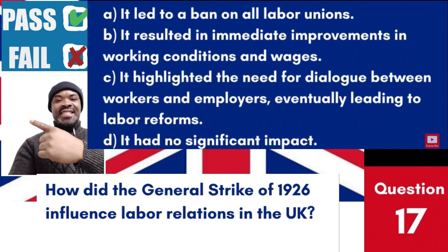Question 17: How did the general strike of 1926 influence labour relations in the UK? a. It led to a ban on all labour unions. b. It resulted in immediate improvements in working conditions and wages. c. It highlighted the need for dialogue between workers and employers, eventually leading to labour reforms. d. It had no significant impact. Answer: c. It highlighted the need for dialogue between workers and employers, eventually leading to labour reforms. The general strike of 1926 was a pivotal event that influenced labour relations by highlighting the workers' grievances and the need for reform and dialogue.